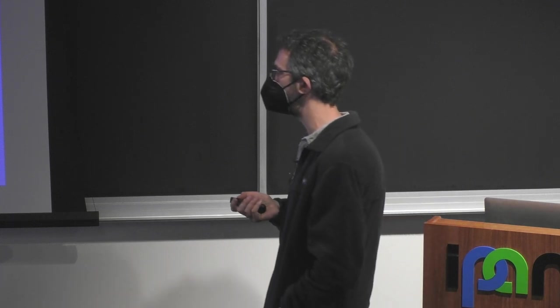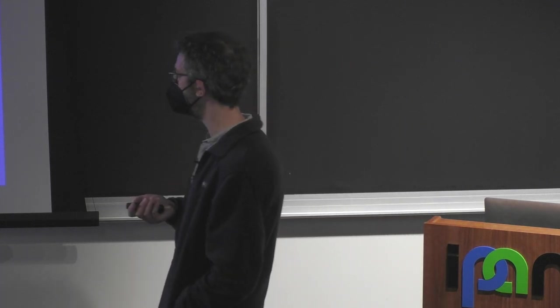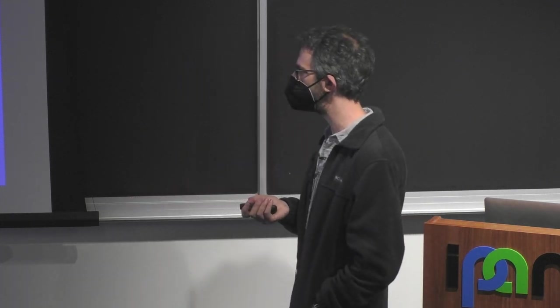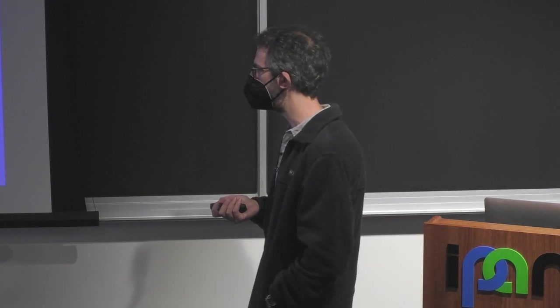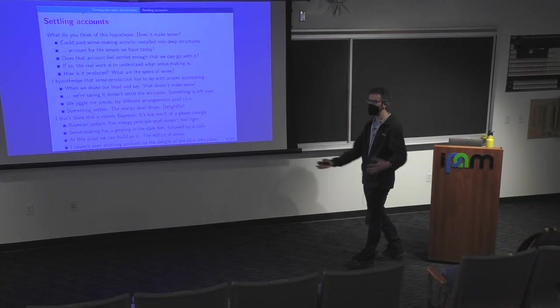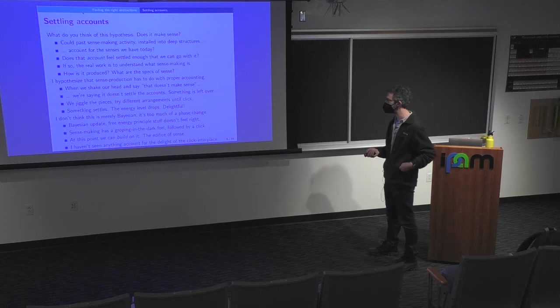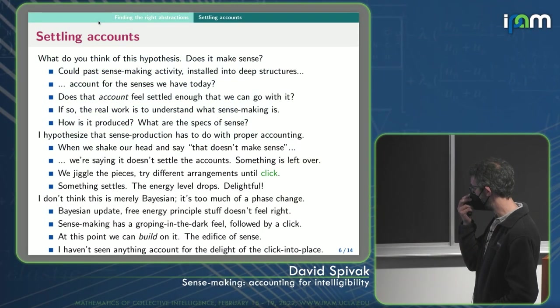So I personally don't think this is merely Bayesian. I don't know enough about the Friston approach or even the Bayesian brain stuff to really say. But it feels like there's a phase change here, and that sense making has this kind of groping in the dark, but maybe I'll learn something, so I'm going to offer this and then hope to receive some feedback that there really is something possible here.